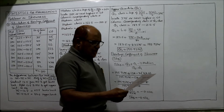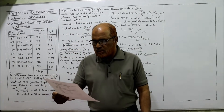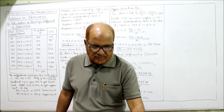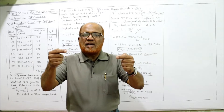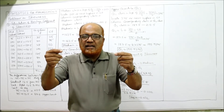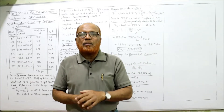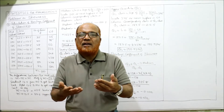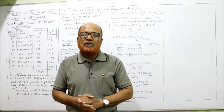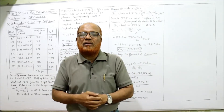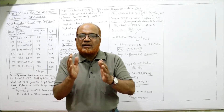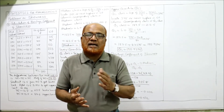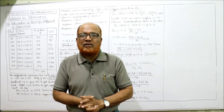The fifth problem asks us to calculate Bowley's coefficient of skewness from the following data, specifically using Bowley's method. Mid values and frequencies are given. Whenever mid values are given, it is a continuous series problem where the class interval is not given. We must convert the mid values into class intervals to form a continuous frequency distribution, then calculate the median and quartiles to find Bowley's coefficient.